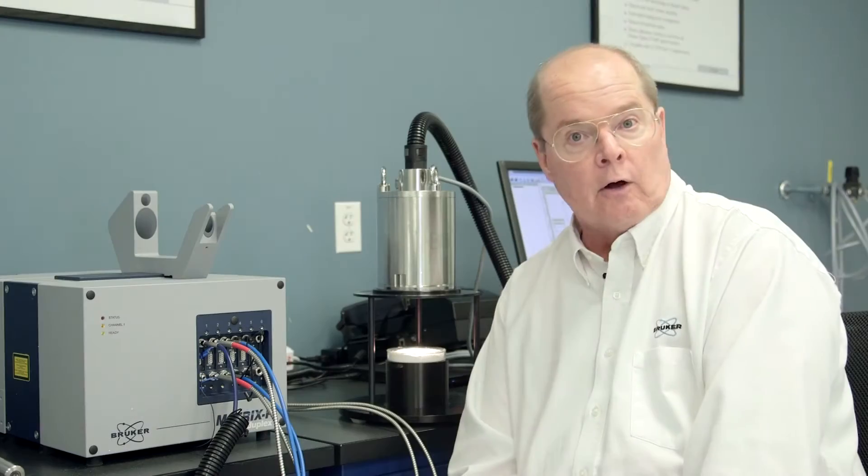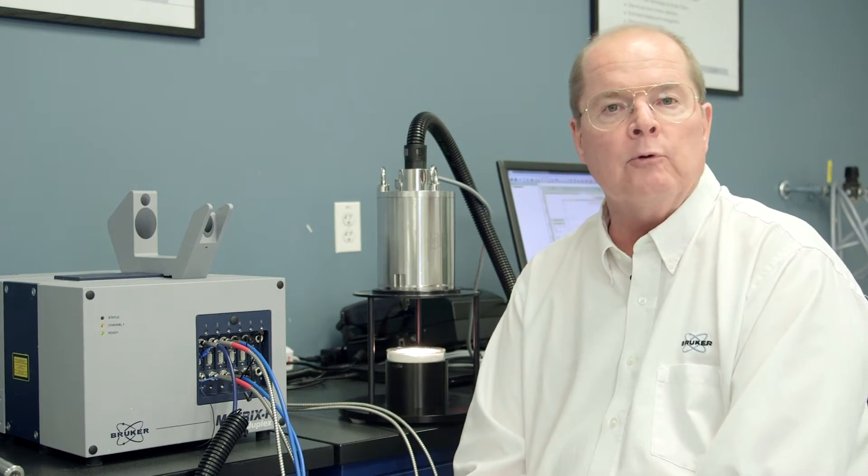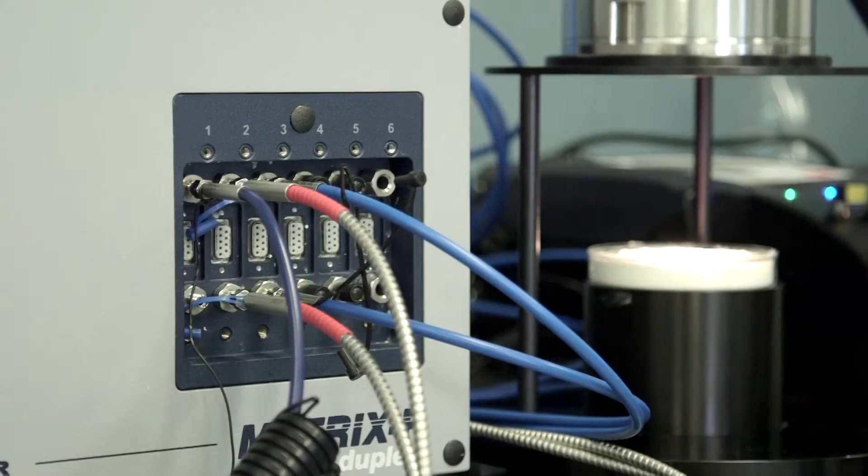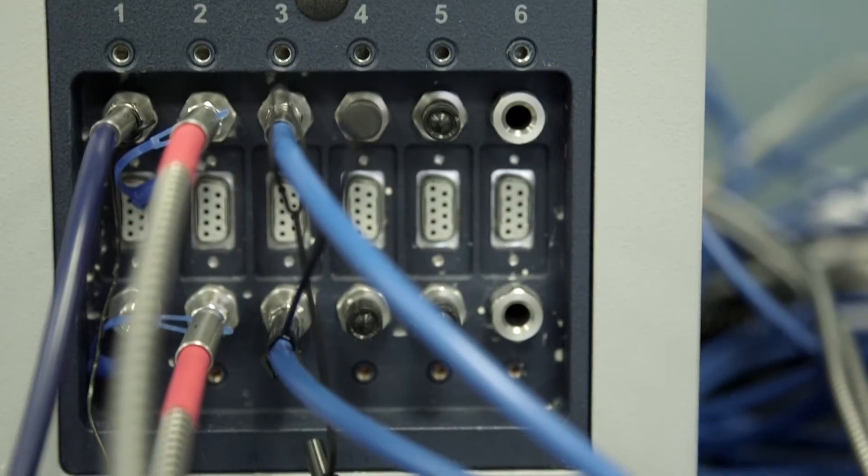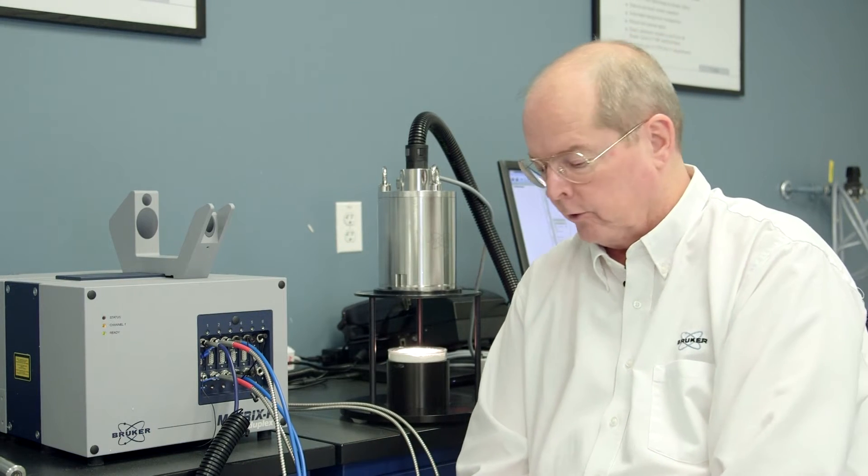The Matrix is a self-contained FTNIR unit. It's available with up to a six port multiplexer, which you see here with the six ports across the front, and we've got a number of different probes hooked up to it to show you today.